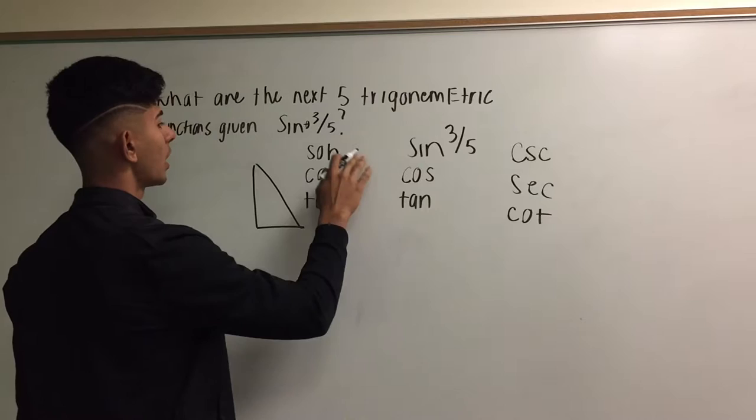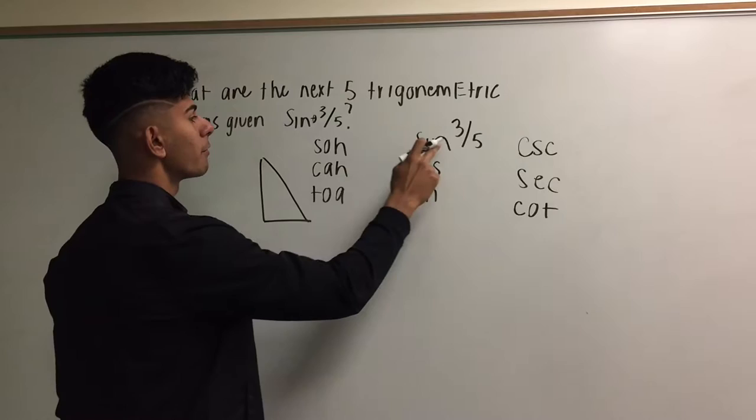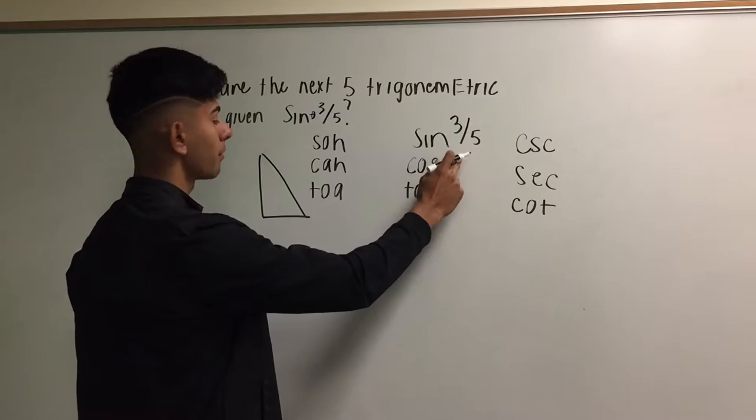So now we can figure out where 3 over 5 goes, given that we have sine. So on sine, it says that we have opposite over hypotenuse. We have 3 over 5. So our opposite would be 3, and our hypotenuse would be 5.